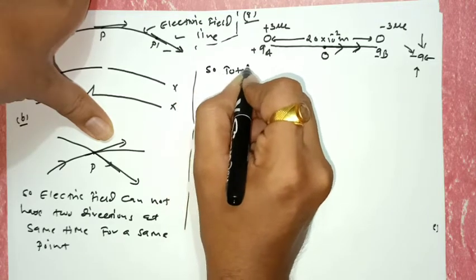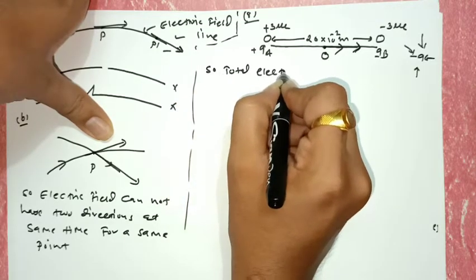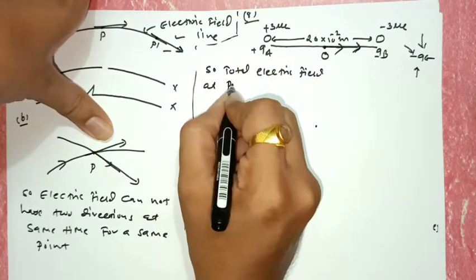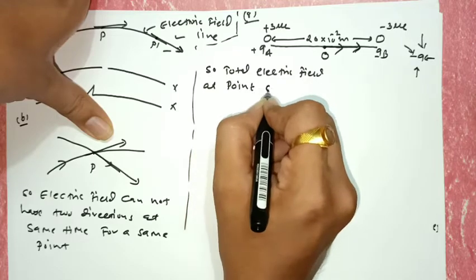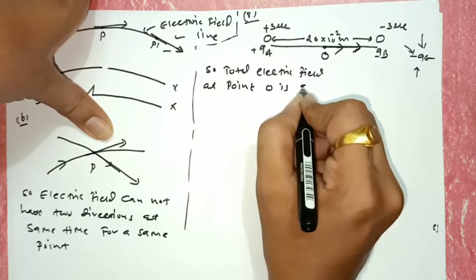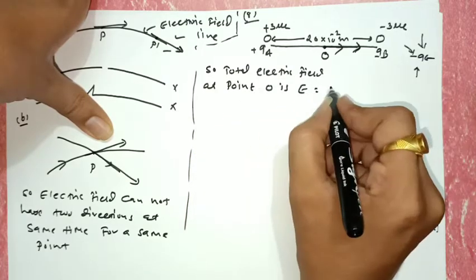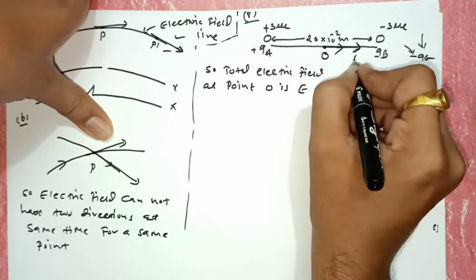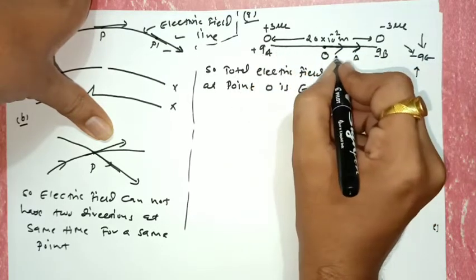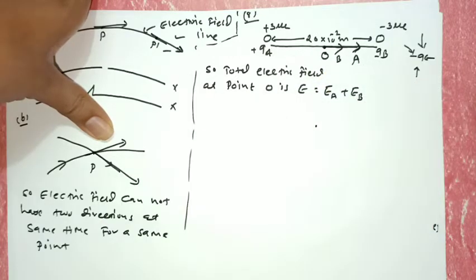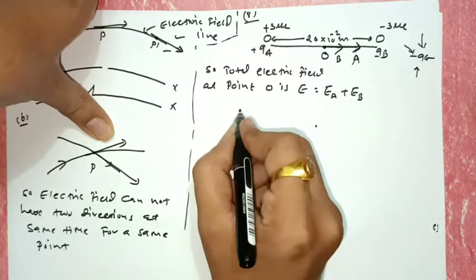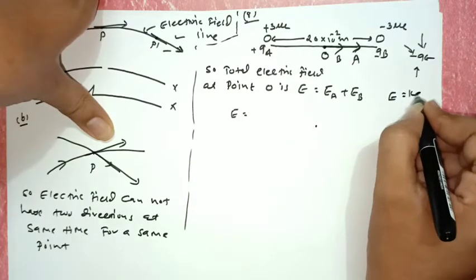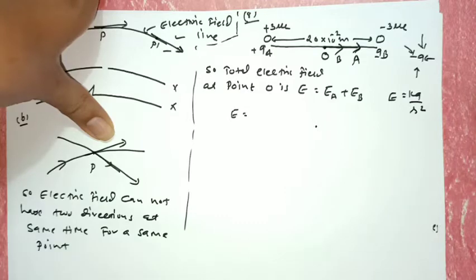Total electric field at point O: E = EA + EB. Let EA be the electric field due to A and EB due to B. The formula is E = KQ/R². The midpoint O is at distance 10 × 10⁻² m from each charge, since total distance is 20 cm.